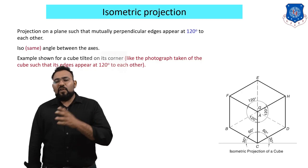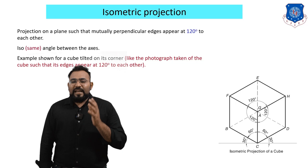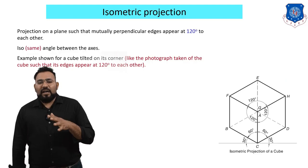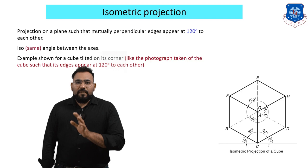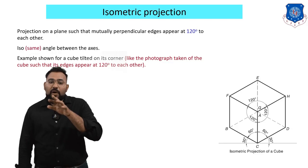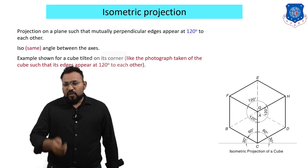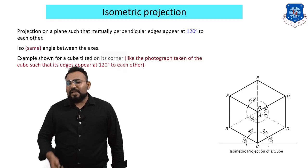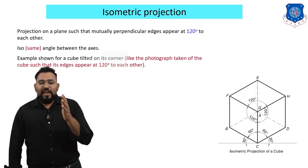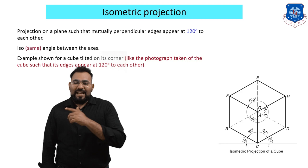As you can see on your screen, isometric projection is a projection on a plane such that mutually perpendicular edges appear at 120 degrees to each other. Always remember the word 'appear' — it is not exactly 120 degrees, but when you look at this object it will look like the mutually perpendicular edges are 120 degrees to each other. 'Iso' means same, so you have the same angle between the x-axis, y-axis, and z-axis.